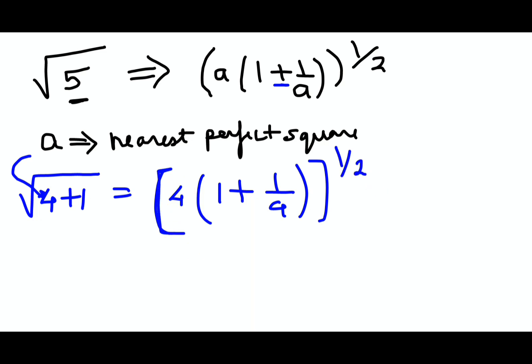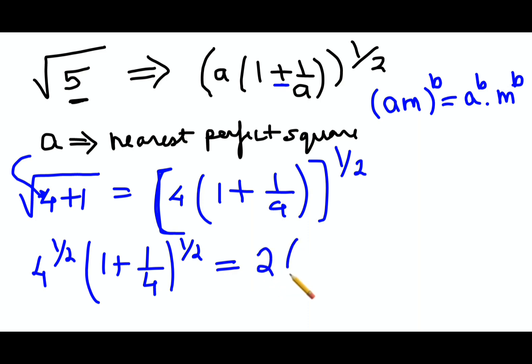And then all you have to do is split this index to the product below. Means when you have a product raised to a particular index, you can write this as nothing but a raised to b into m raised to b. So now what happens over here is we'll have 4 raised to half and this will have 1 plus 1 upon 4 the whole raised to half. Now 4 raised to half is 2, and this bracket can be written in certain form because this particular fraction is less than 1.